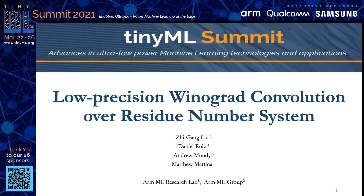Our next speaker is Jay Gang Liu. He is a principal research engineer at ARM Incorporation in Boston, Massachusetts. His research area includes neural network optimization, such as sparsity and quantization, and power-efficient hardware accelerator.